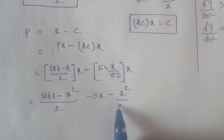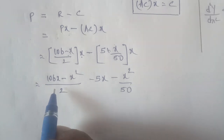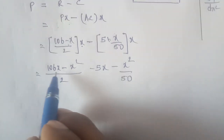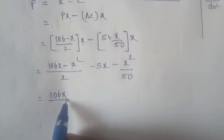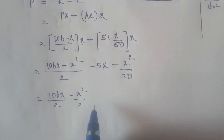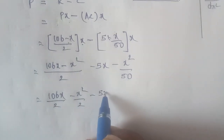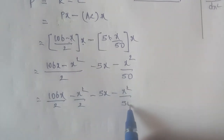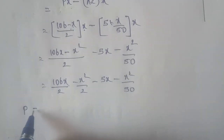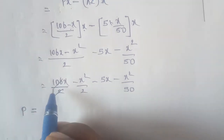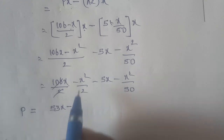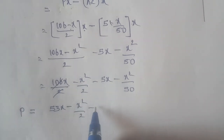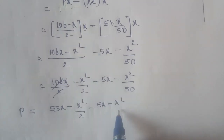The profit function P equals R minus C equals 106x divided by 2 minus x squared divided by 2 minus 5x minus x squared divided by 50. Simplifying: P equals 53x minus x squared by 2 minus 5x minus x squared by 50.